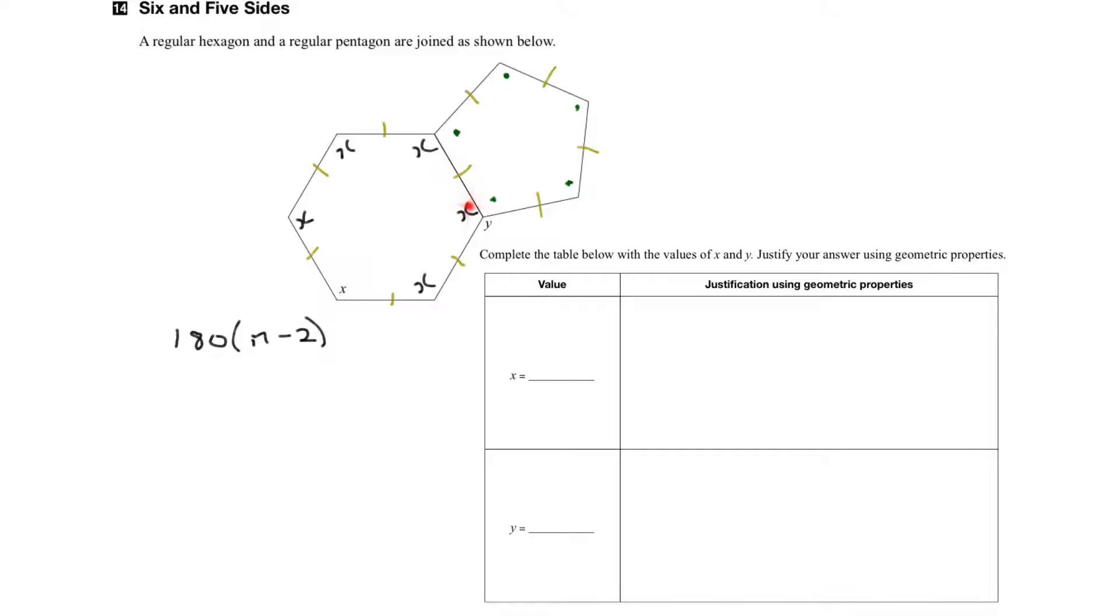So for the hexagon, there's six sides, therefore, the sum of the interior angles would be given by 180, 6 minus 2, or 180 times 4, which equals 720 degrees.